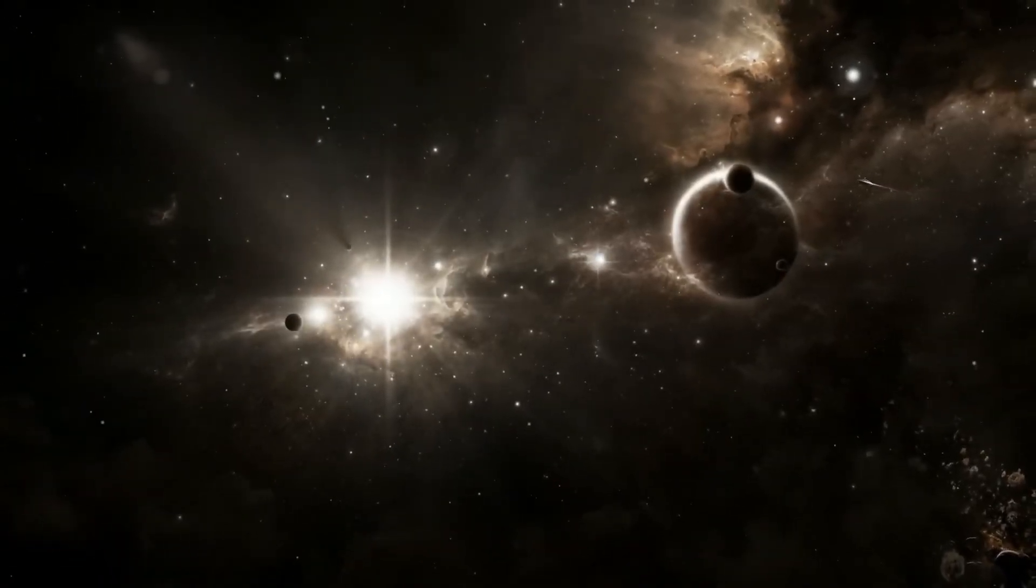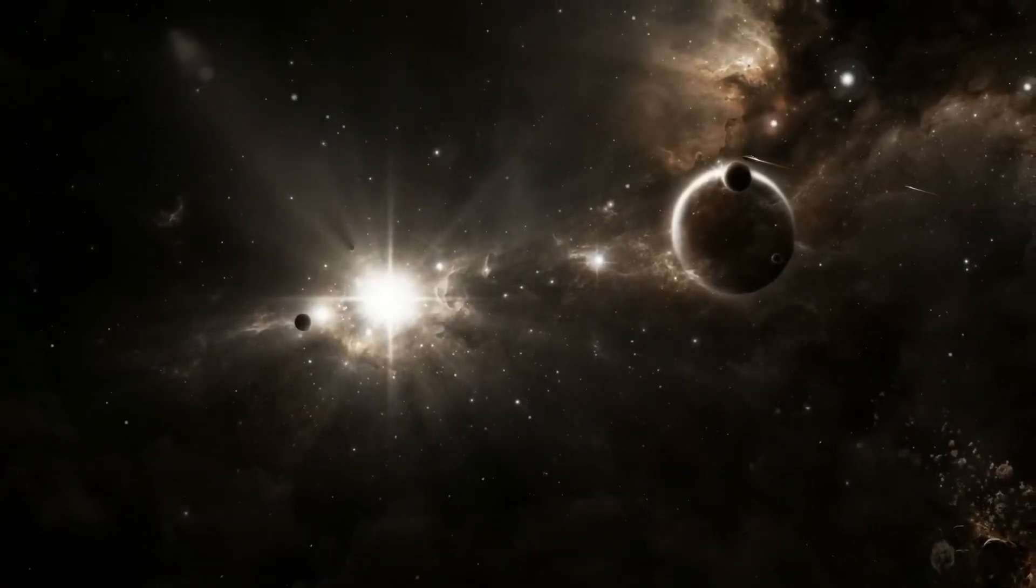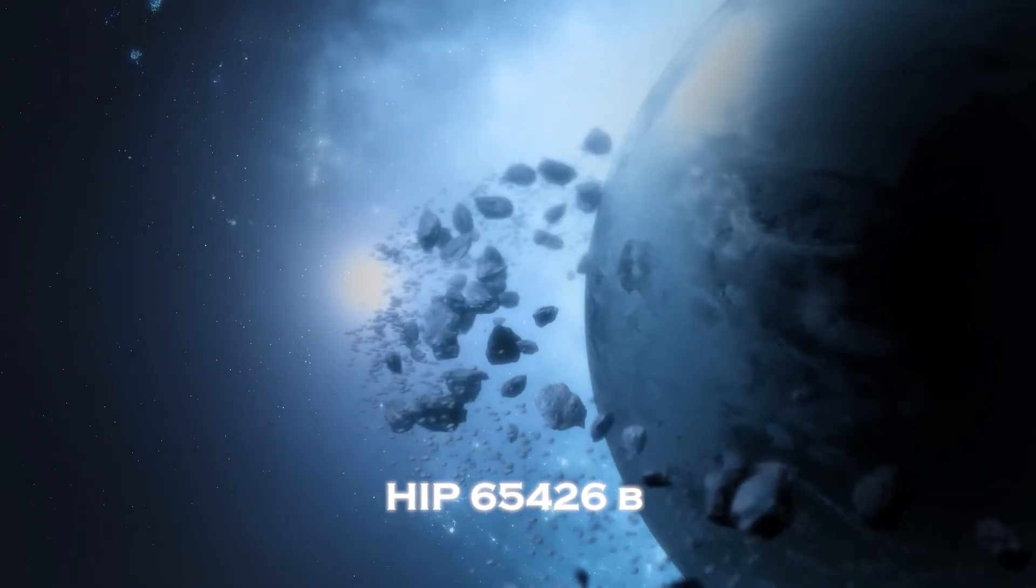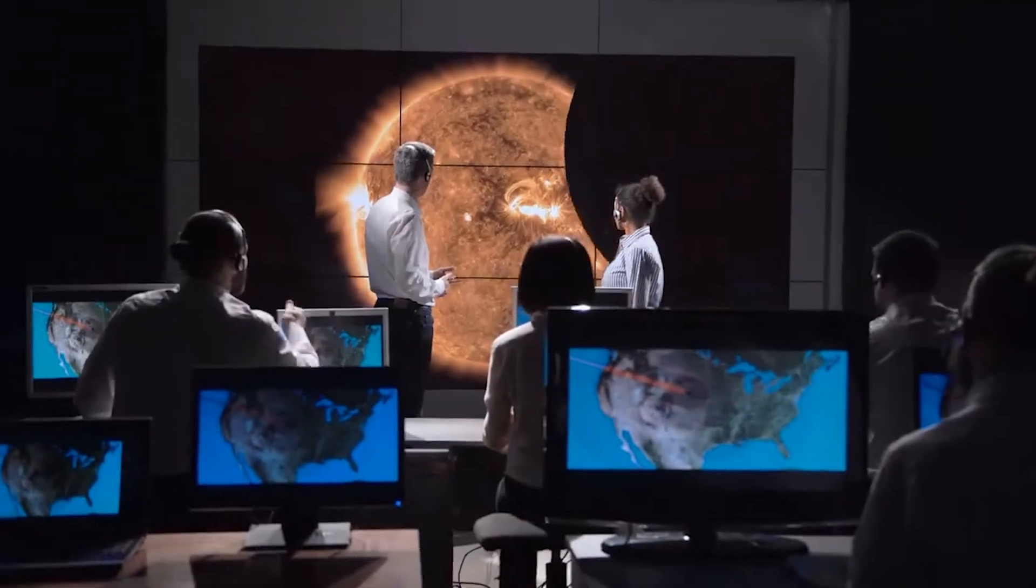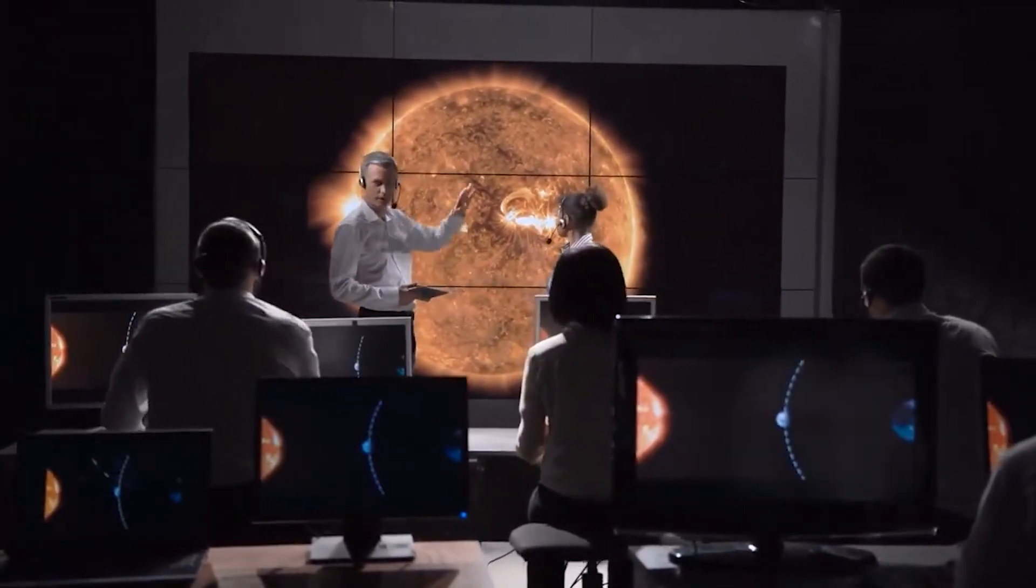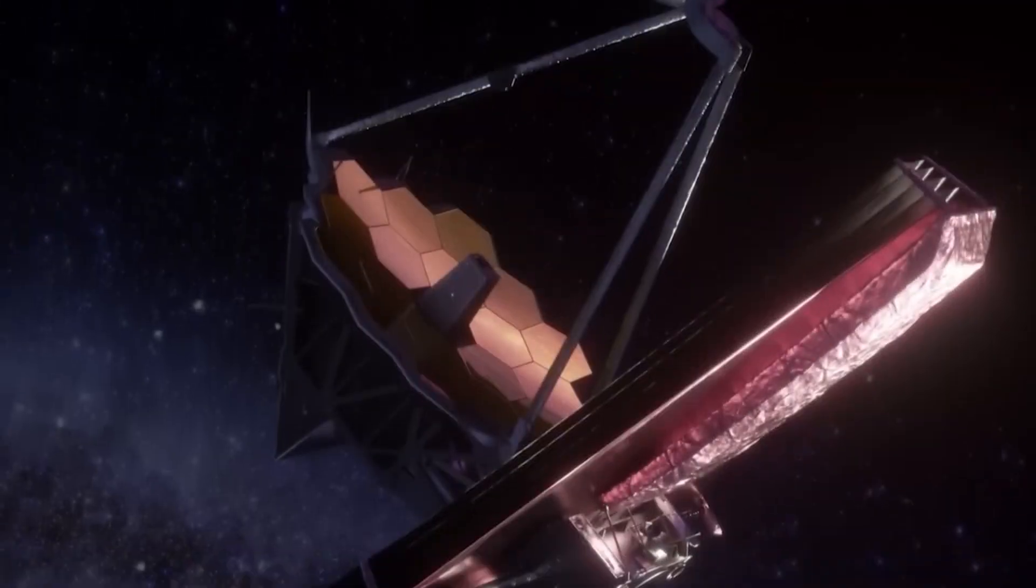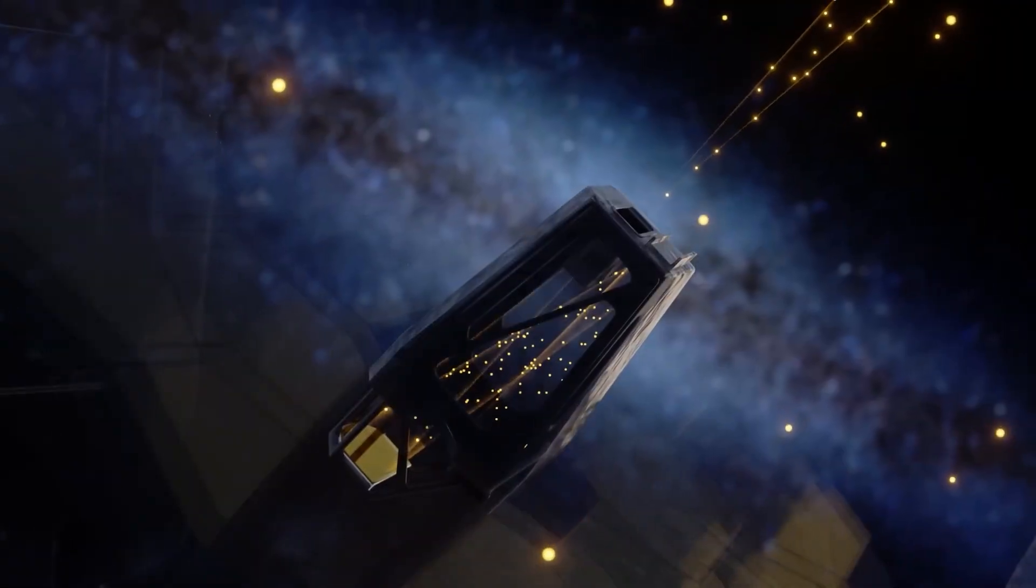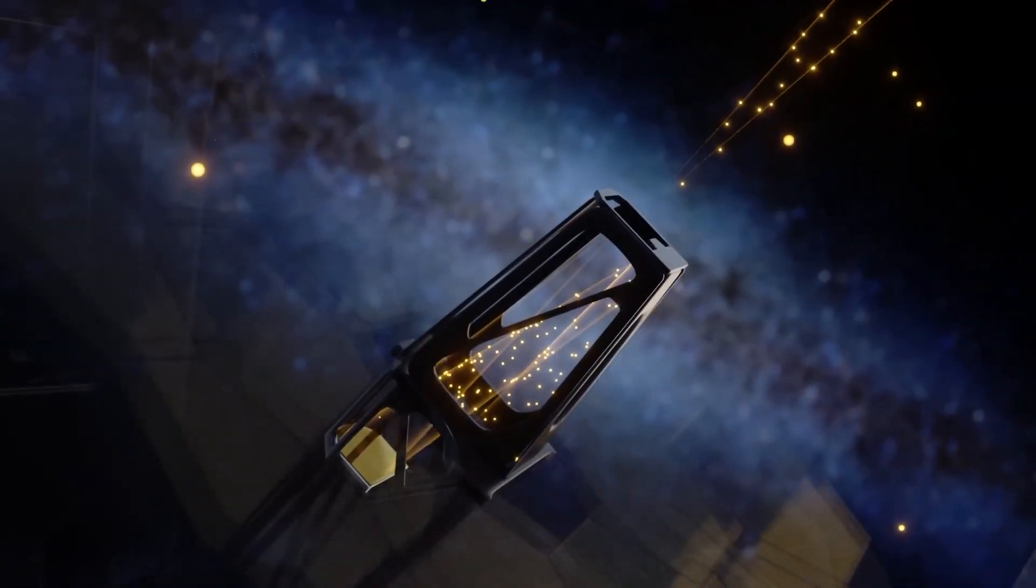The first direct image of an exoplanet was taken in September last year. This planet was identified in 2017 and given the name HIP65426b. Scientists used coronagraphs on telescopes to exclude light from the central star, along with two of the Webb Telescope's cameras, a series of filters and other equipment to observe it.